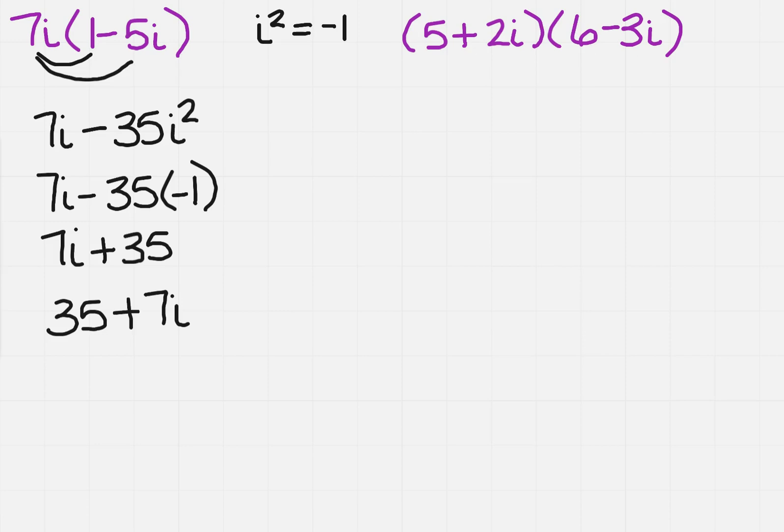So if I'm going to use that FOIL, remember you're going to take the first, and then you're going to take the outer, the inner, and the last. So I'm going to get 5 times 6 is 30, minus 15i, plus 12i,